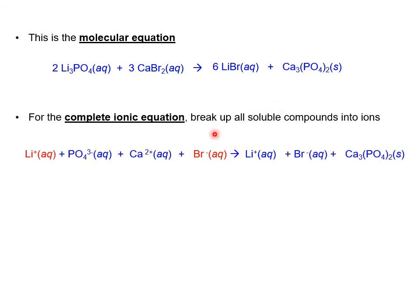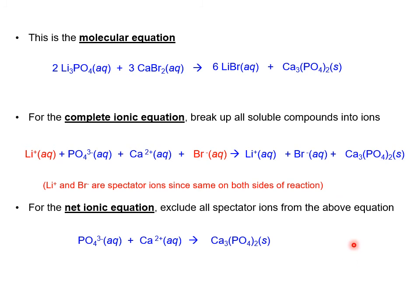From the molecular equation, we write the complete ionic equation by breaking up all soluble aqueous compounds into their constituent ions. The three aqueous compounds are broken into ions, but the solid calcium phosphate remains as an unionized neutral compound. For the net ionic equation, we leave out the spectator ions — lithium and bromide did not change from reactant to product side — so the net ionic equation only includes the ions that formed the solid product.